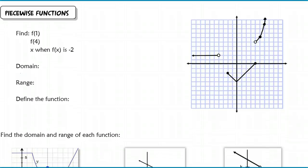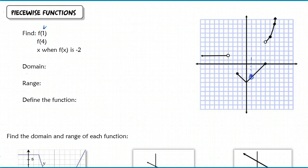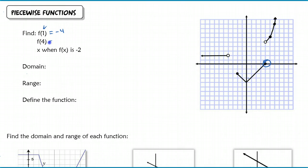You're going to see different functions that are defined by multiple equations - we call those piecewise defined functions, or just piecewise functions. This picture here is discontinuous, and we have different equations that define the graph. Let's start with just finding f of 1. My input is 1, so I go to where x equals 1, and my output is negative 4. For f of 4, where x equals 4, you've got two different circles. You don't want to use the open circle - that's where the graph is not defined. We use the filled point, and we get f of 4 equaling 0.